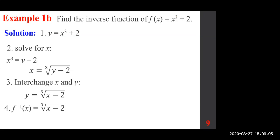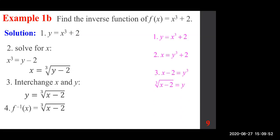The method I prefer: start with the given, change f(x) to y — that's the first step. Then do the interchanging right away: change y to x and x to y. So I get x = y³ + 2. Now I solve for y: subtract two, then take the cube root. I'm done — just change the name y into f inverse.